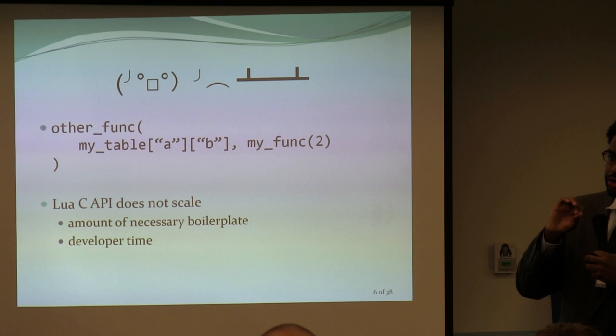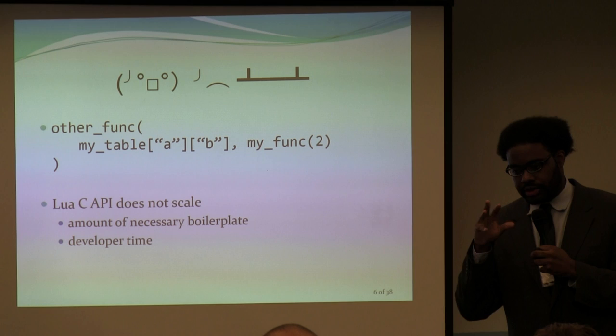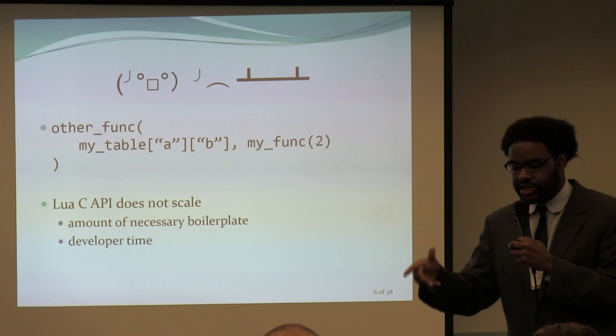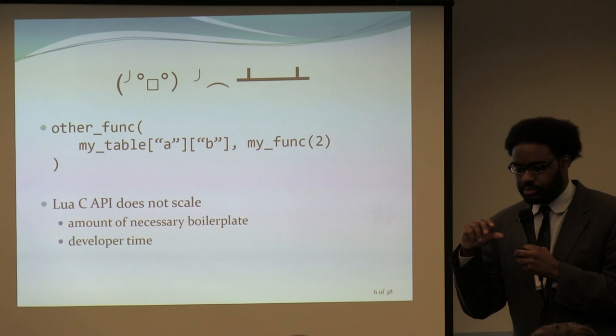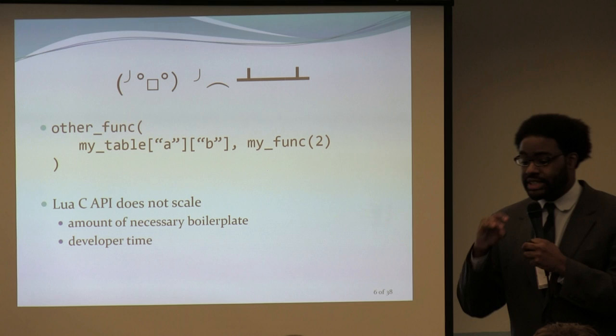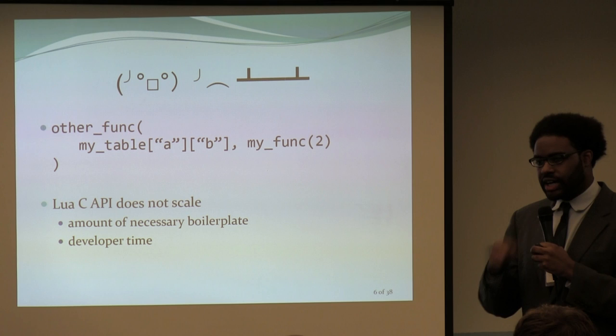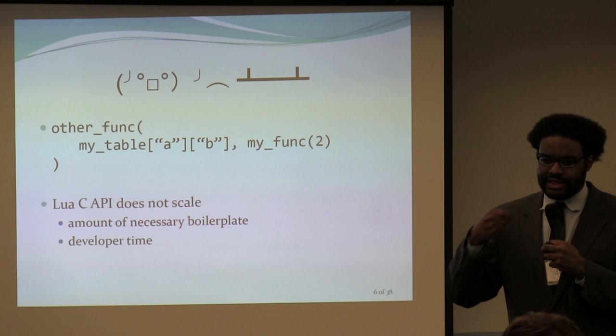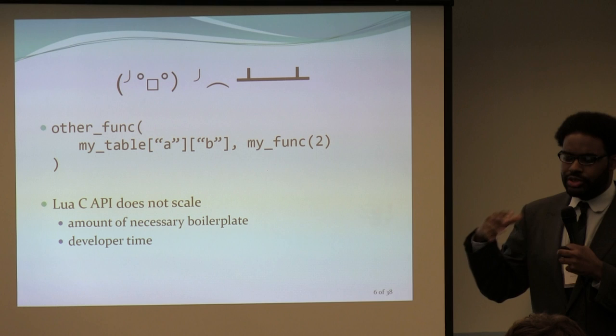It's very painful to do that properly. It's very painful to keep the stack clean and make sure that after evaluating 'my_table.A.B' and 'myfunc(2)', the stack is perfectly right and ready to be called by other functions. In other words, the C API doesn't scale — not in terms of speed, but in terms of the amount of necessary boilerplate. It costs a lot of developer time, and with the tools we have now, it's starting to become a little unacceptable.